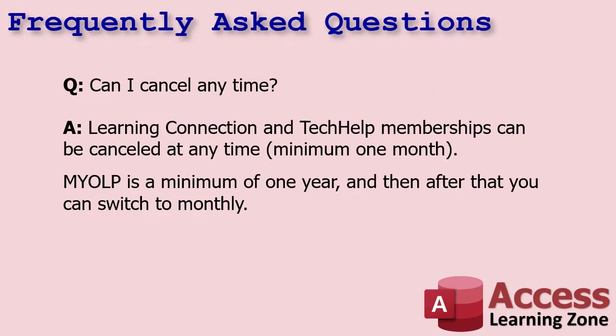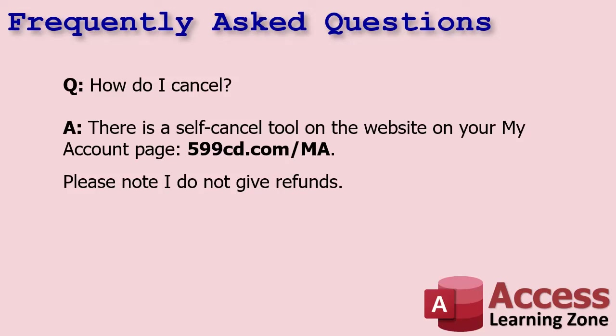Can you cancel anytime? Yes. Learning Connection and Tech Help memberships can be canceled at any time, with a minimum of one month. MyOLP has a minimum of one year, and after your first year you can switch to monthly. The reason for that is people would sign up for a month, download everything, and cancel — obviously not fair. How do you cancel? There is a self-cancel tool on the website on your My Account page. Please note I do not give refunds, so make sure you cancel before your membership renews. If you cancel six months into a one-year membership, I don't give refunds — I'll give you a credit towards something else.